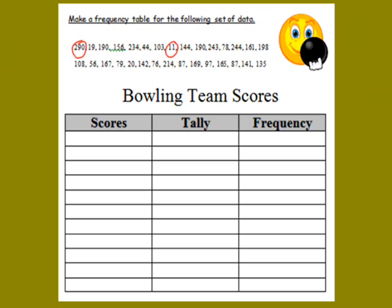After you find your high and your low, you have to come up with a scale. You want to scale from 0 to something that incorporates all those bowling scores. Because our highest number is 290, let's go from 0 to 300 — that's our scale. Now we need to break that scale up into intervals. Are we going to go by 1s, 2s, 5s, 10s? You don't want an interval that's too big or too small. Let's try an interval of 50.